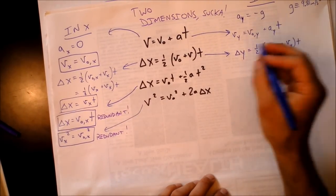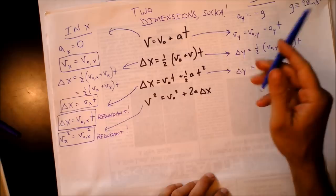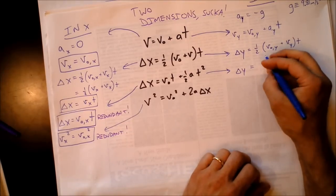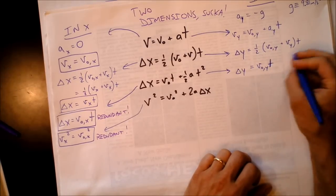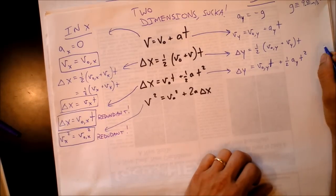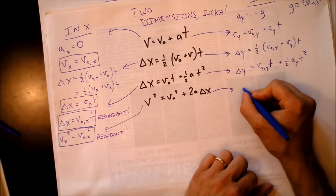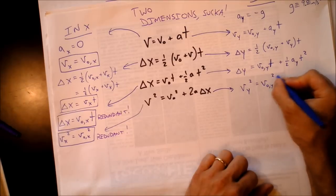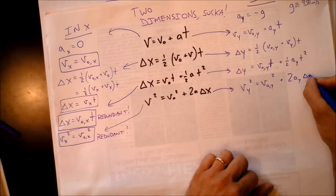The classic in the y direction: delta y equals initial velocity in y times time plus one half times acceleration in y times t squared. This time the acceleration is not zero, so we actually get to use it. And the tale of two squares: v_y squared equals v_naught_y squared plus two times a_y times delta y.